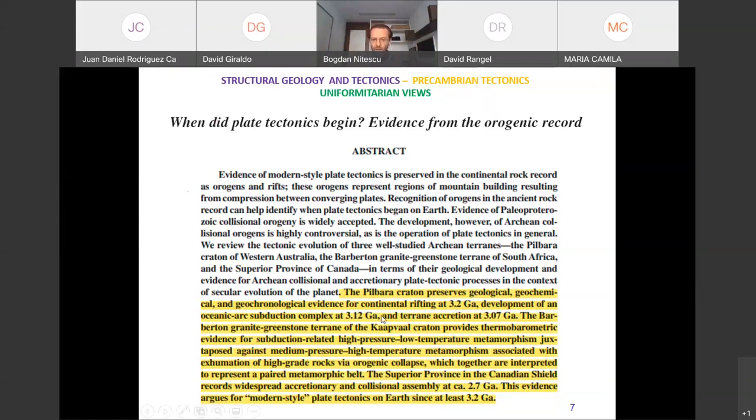Basically, what they say in the abstract: You remember the Pilbara craton in Australia with those domes, granitic domes and in between, vertical structures, these initially flat layers of basalt? The idea of vertical tectonics, I've shown you this last time on a satellite image, a geologic map. Obviously a terrain that looks totally different from what we see today. These people have this statement: they say the Pilbara craton preserves geological, geochemical, and geochronological evidence for continental rifting at 3.2, development of an oceanic subduction complex at 3.12, and terrain accretion at 3.07.